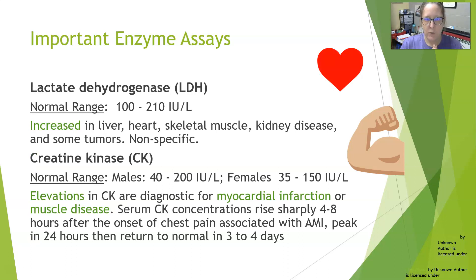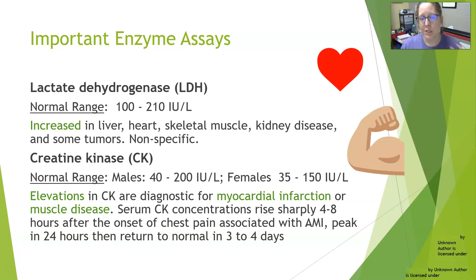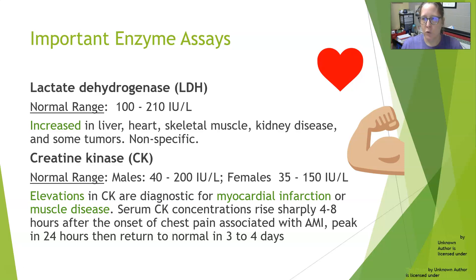Looking at some important enzyme assays: lactate dehydrogenase (LDH) has a normal range of 100 to 210 international units per liter. LDH is increased in liver, heart, skeletal muscle, and kidney disease, and in the presence of some tumors. It is a very non-specific enzyme because it is contained in so many cells. However, if the physician identifies the injured tissue, LDH can be used to track therapy and monitor whether elevated levels are returning to normal.